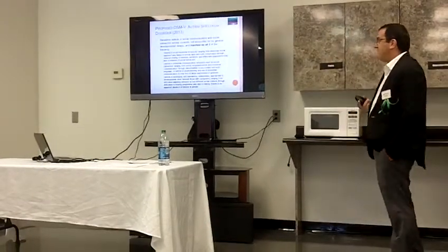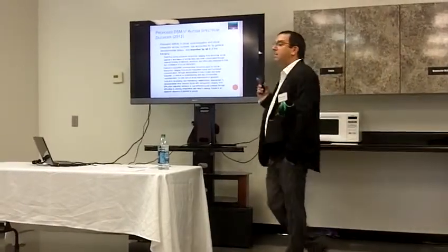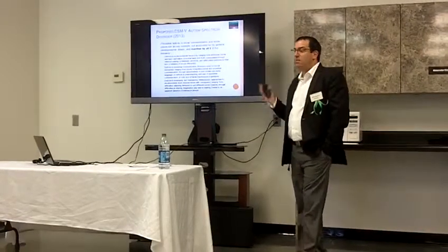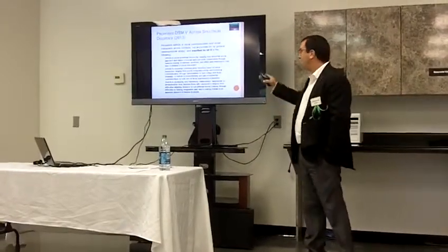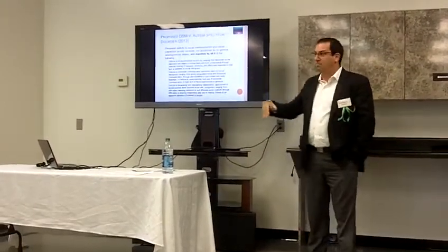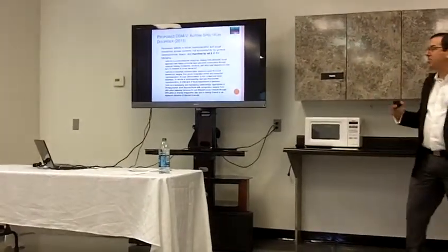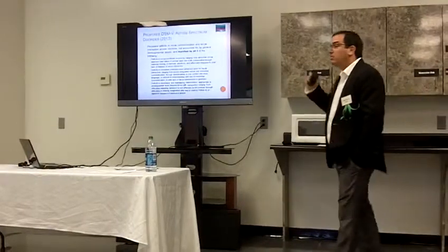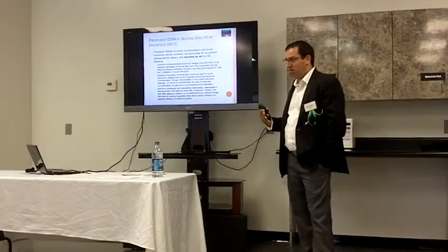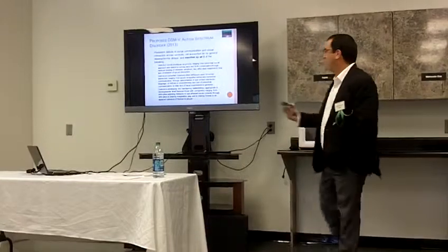They also have to have deficits in developing and maintaining relationships appropriate to developmental level, but beyond caregivers — so beyond parents. This has to be with teachers, peers, and so on. And they're not able to adjust their behavior to fit the social context they're in. Kids learn how to do that by the age of four — knowing how to behave at church differently than elsewhere, for example.